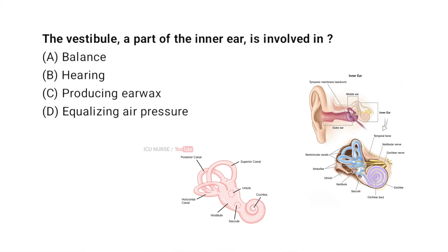The vestibule, a part of the inner ear, is involved in: A. Balance, B. Hearing, C. Producing Earwax, D. Equalizing Air Pressure. And the correct answer is A. Balance.